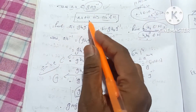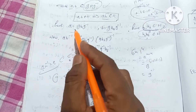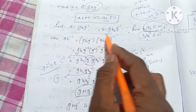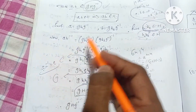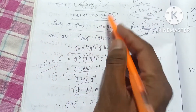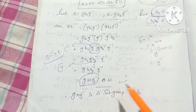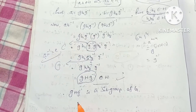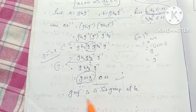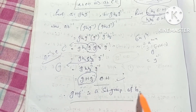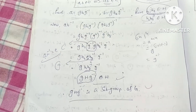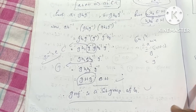A·B⁻¹ belongs to H. If you take A·B belongs to H, then you can take A·B belongs to H. Therefore, gHg⁻¹ is a subgroup of G. So this is easy to verify.